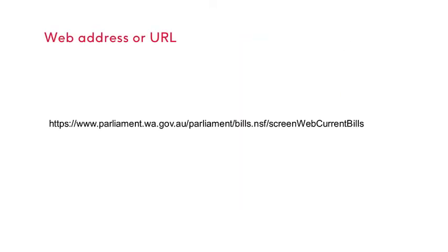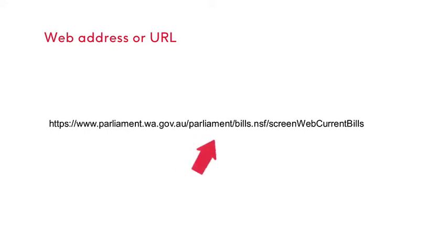Let's look at the information contained in a web address or URL. From this example web address we can see that it is a government website .gov for the state of Western Australia .wa in Australia .au. The domain name is for the Western Australian Parliament .parliament and the page is for a list of current bills. We can see the path to the file name after each backslash.